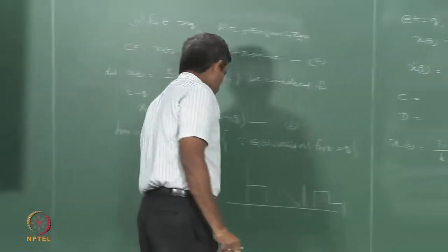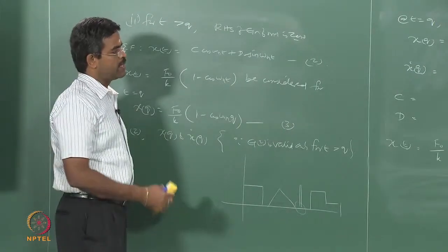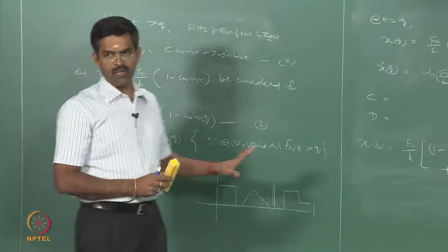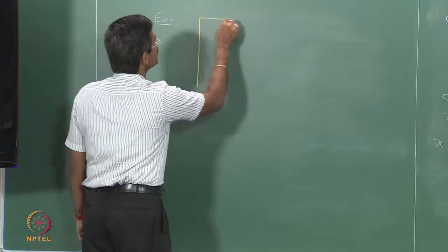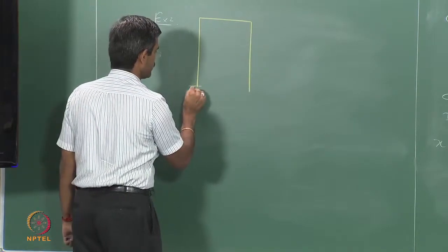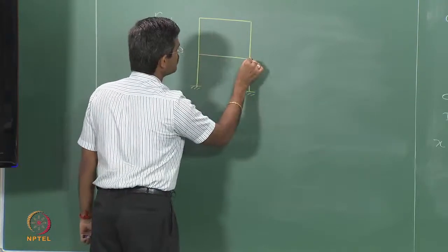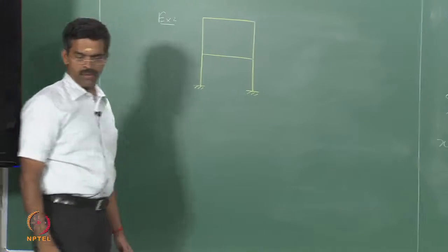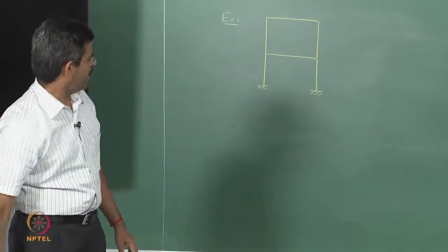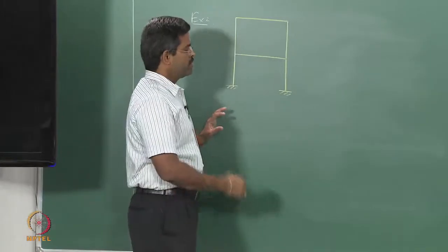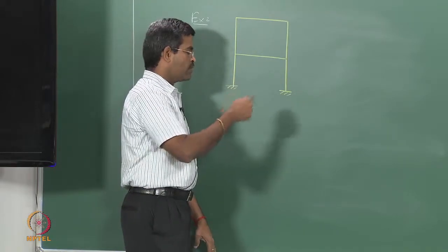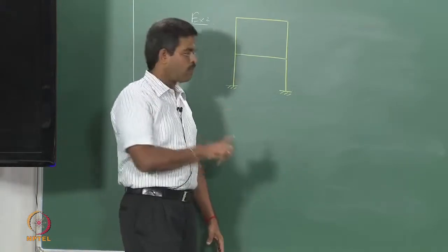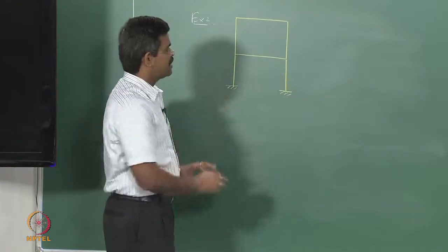We will take one more example where I will take a two-degree-of-freedom system and derive K and M. I have a single-bay, two-storey frame which is fixed at the bottom. I am taking very simple examples to illustrate it. In the second module, you will pick up original offshore structures and learn how to derive K and M for different kinds of structures like a TLP, spar, et cetera. But let us first understand how to derive these matrices for simple problems.